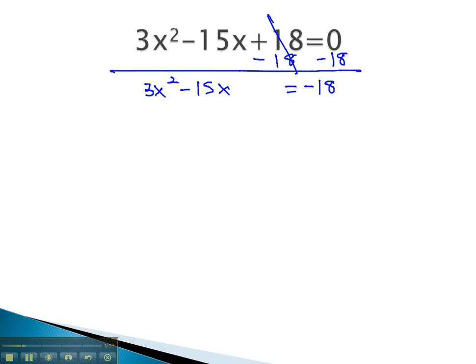Our next step is to divide by a, so that there is no number in front of the x squared. When we do this, we will divide each term by a as well. We now have x squared, minus 5x, equals negative 6.